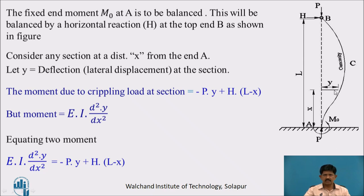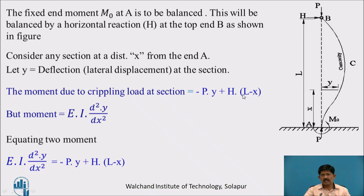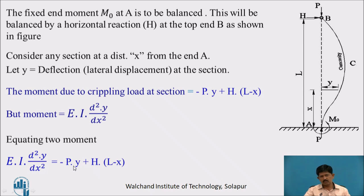We will consider the section at a distance X from A, with lateral deflection Y. The moment at this point is minus P times Y — because P acts anticlockwise, taken as negative — plus H times (L minus X), which forms a clockwise moment. Mathematically, the moment equals EI d²Y/dx², so equating: EI d²Y/dx² = −P·Y + H(L − X).